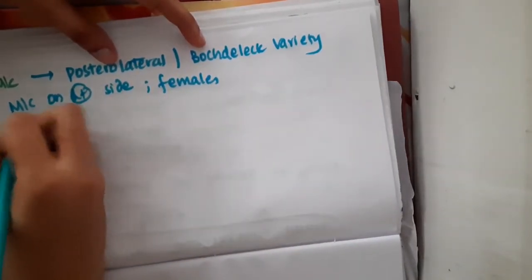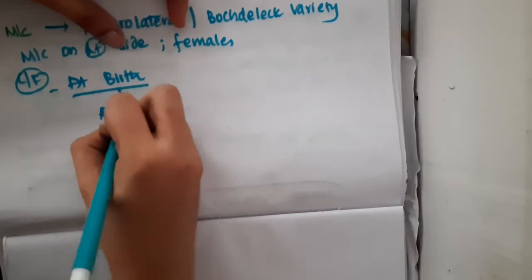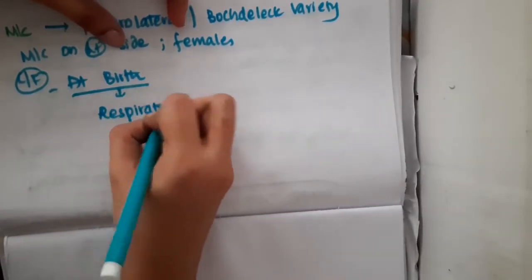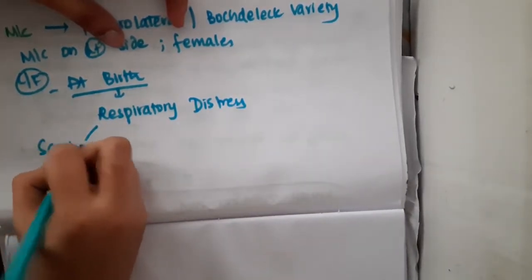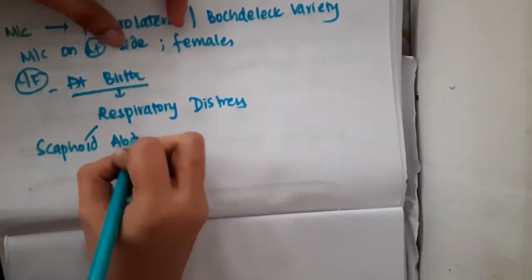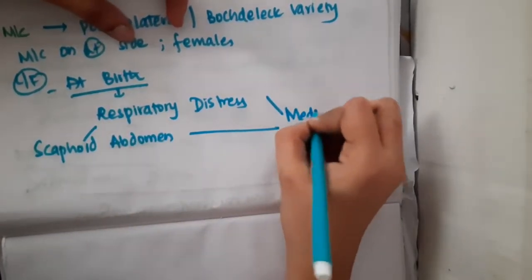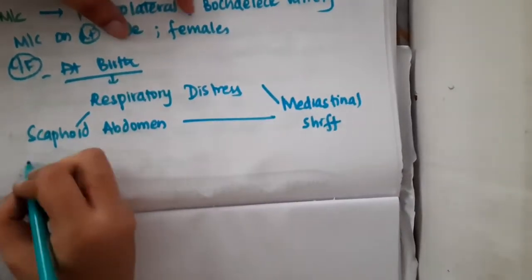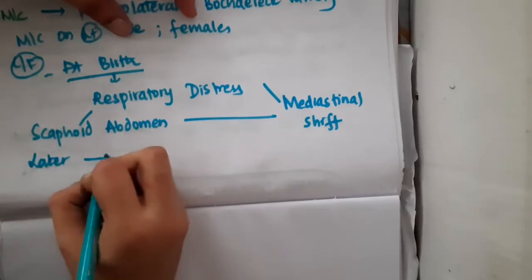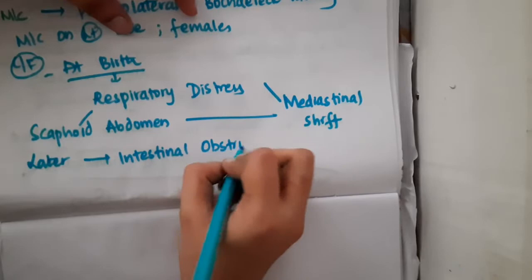At birth, you will see a triad of respiratory distress, scaphoid abdomen, and mediastinal shift. Later in life, intestinal obstruction is seen in the baby.